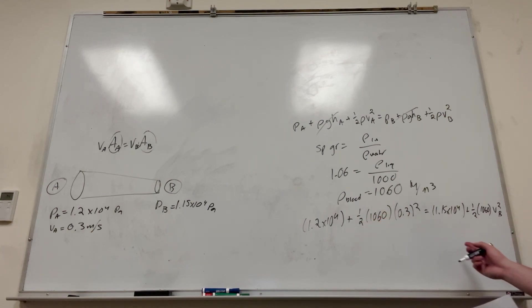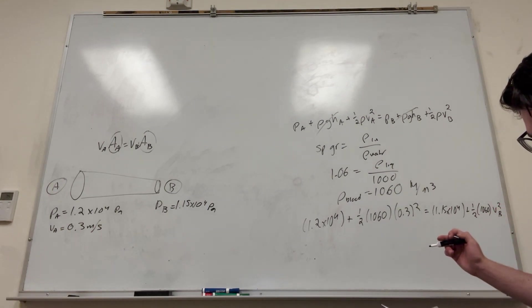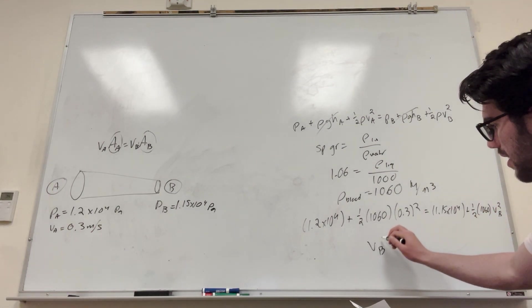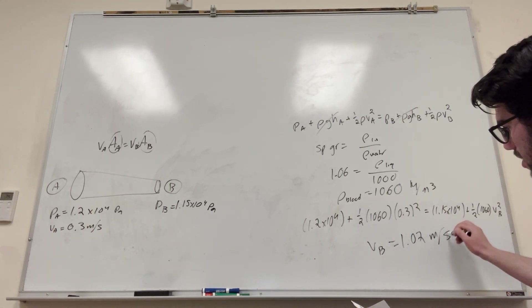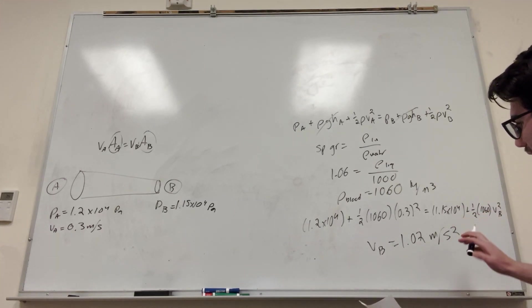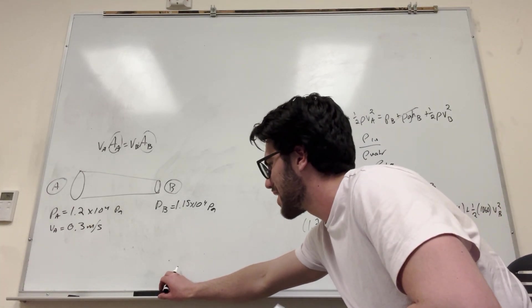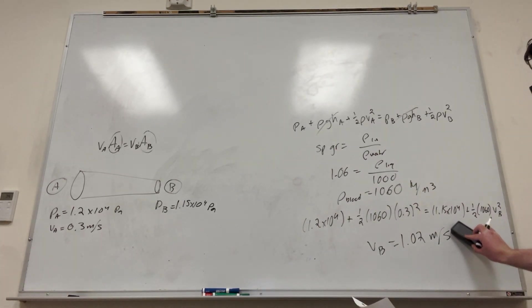So yeah, this is just numbers now. Basically, what you do is you do the math of this part, and then you subtract it by this part, multiply it by 2, divide it by this, and then take the square root. I'm sure you guys know how to do this. So you're going to get the velocity of B is equal to 1.02 meters per second. Not squared, meters per second normal. That's its velocity. Okay, so we found the velocity of B.